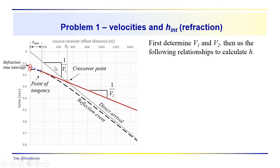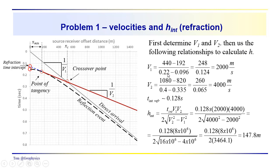The first thing that you would do would be to determine the velocities V1 and V2, and then you'd use the following relationships to calculate h. If we take the reflection time intercept as an example and use that relationship in order to calculate the thickness of the layer, we'd be using this formula here. Hopefully you've made a copy of the shot record and were able to make measurements. You can see that if we extend this line over here that we get a distance of approximately 192. Over here, this is 440.